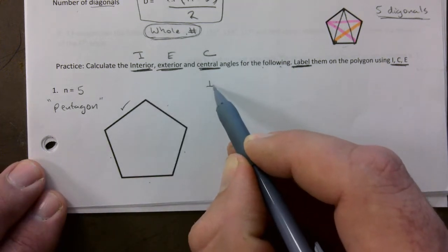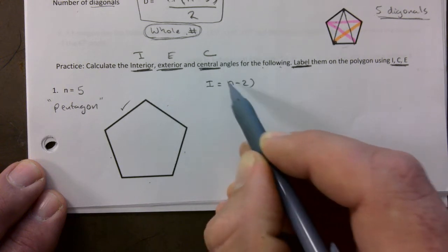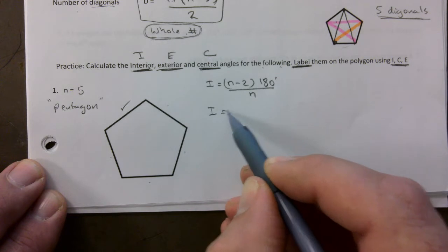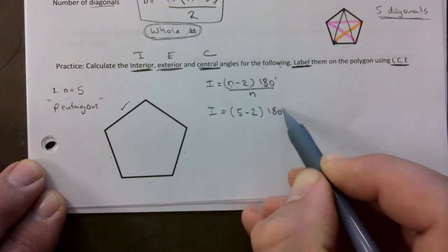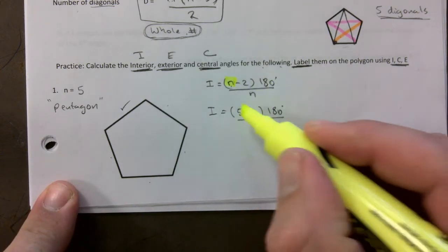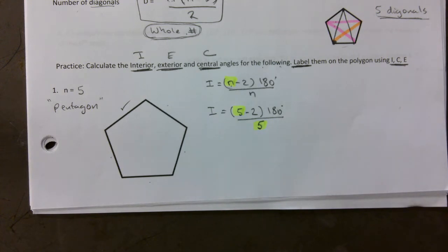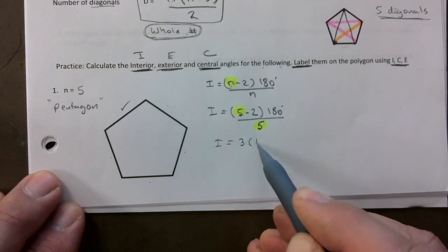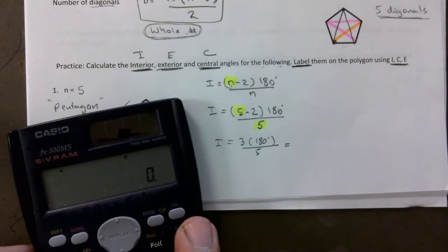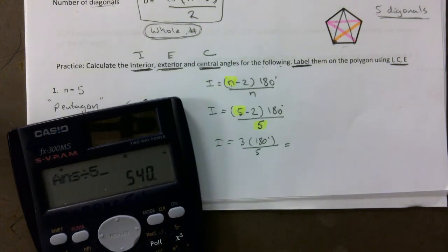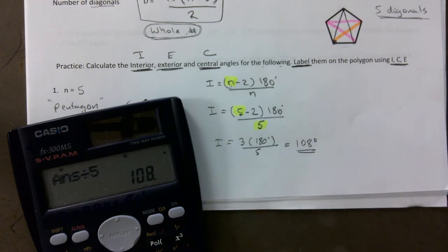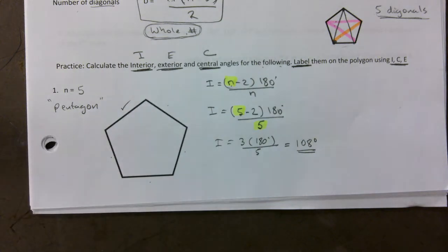The interior angle formula is (n minus 2) times 180 degrees divided by n. With n equals 5: (5 minus 2) times 180 divided by 5 = 3 times 180 divided by 5 = 540 divided by 5 = 108 degrees. So the interior angle is 108 degrees.